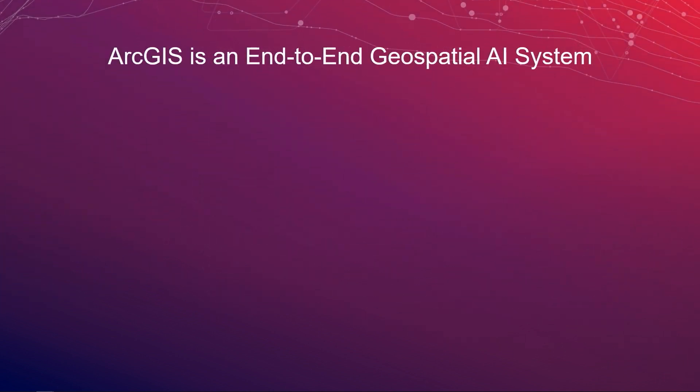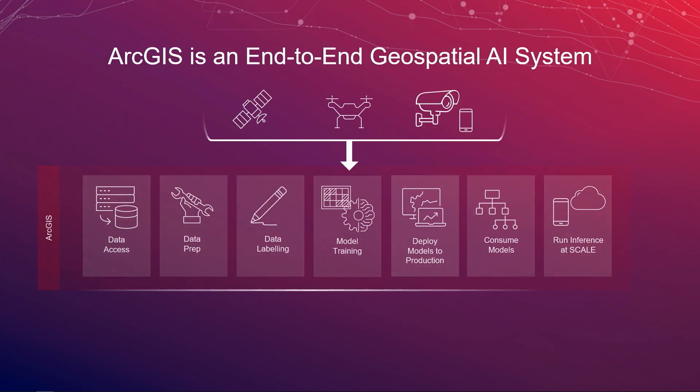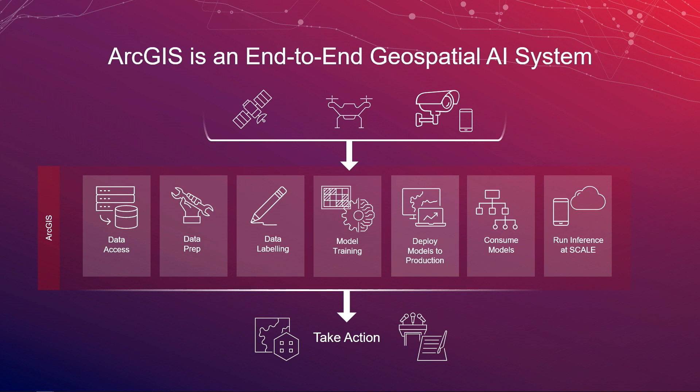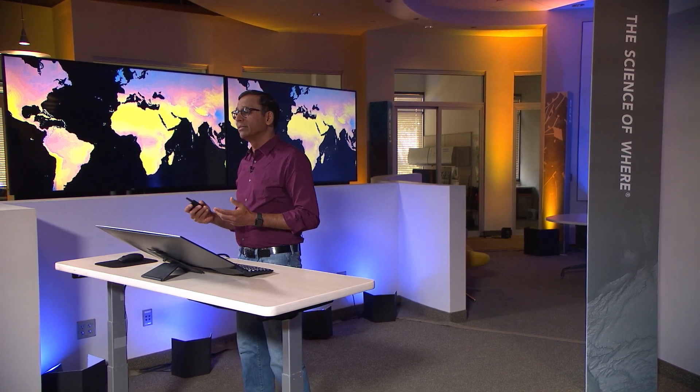RTS is an end-to-end geospatial AI system. By that, what I mean is right from the time you access the data and prepare it for labeling, all the way through model training, QA, and validation to inferencing, and being able to inference at scale in production environments. And then the loop back into taking the right decisions based on the outcomes from these inferencing methods.